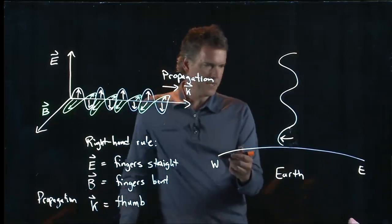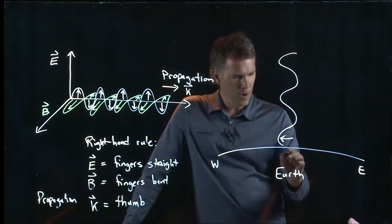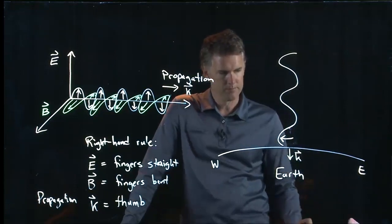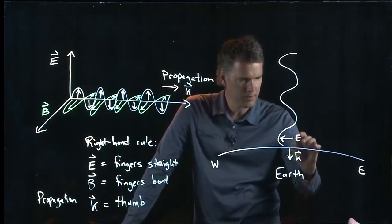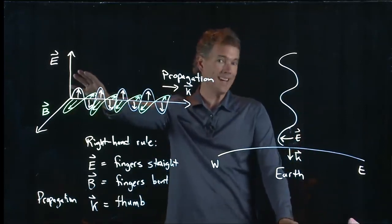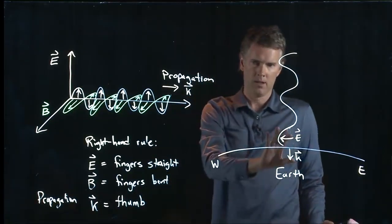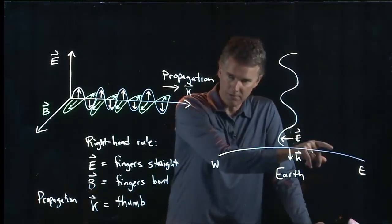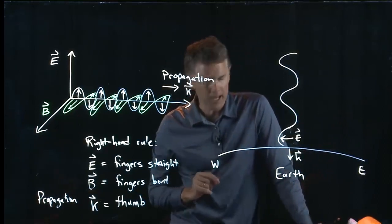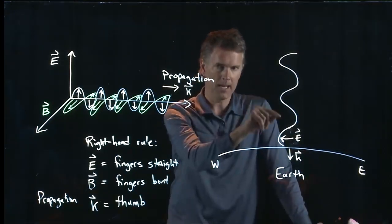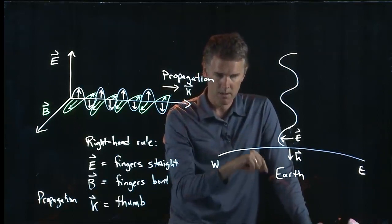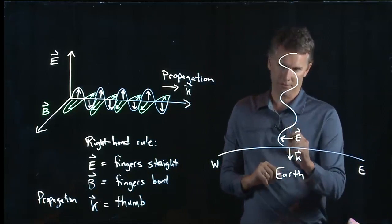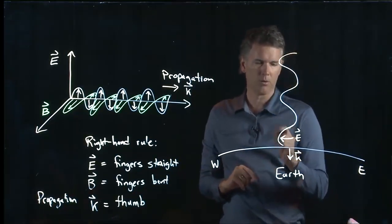So if the electric field is pointing west and the wave is propagating towards the center of the earth, this is our E field, we know that the B field has to be at a right angle to the E field. So it can't be west and it can't be east. We also know that it can't be up and it can't be down.